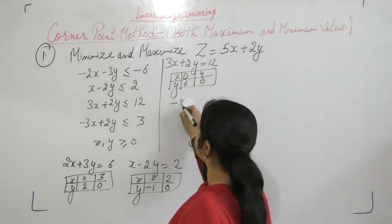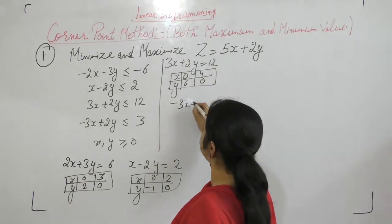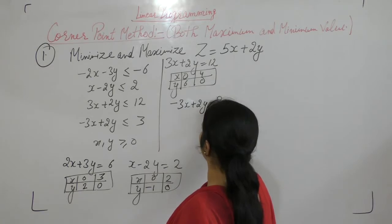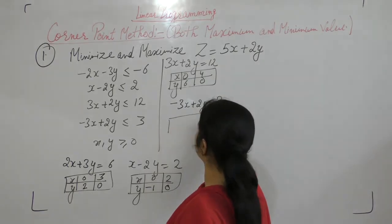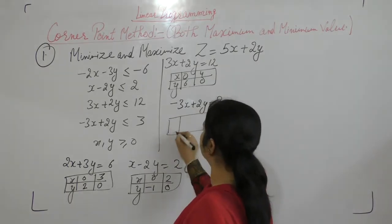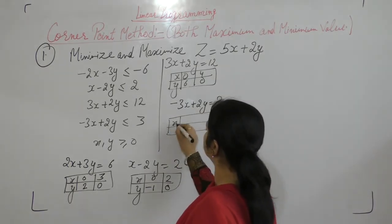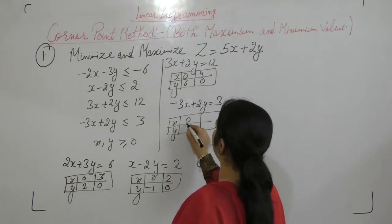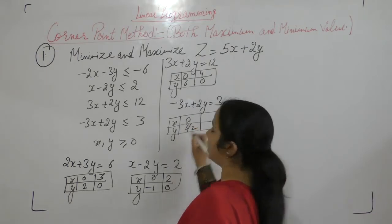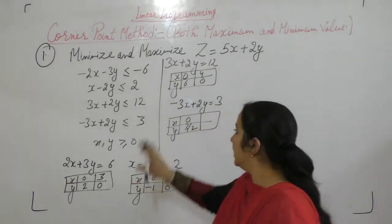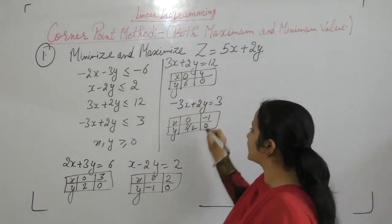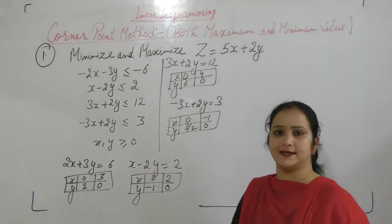The next equation is minus 3x plus 2y equals 3. When x equals 0, y equals 3 by 2, and when y equals 0, x equals minus 1.